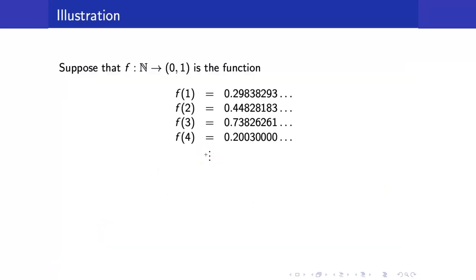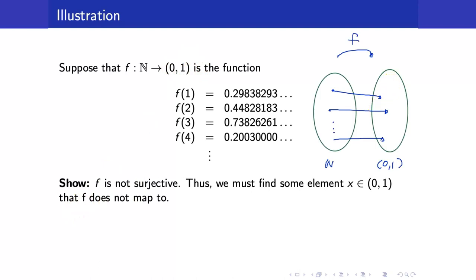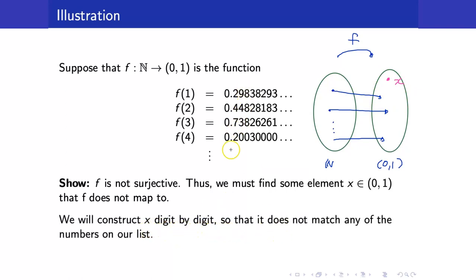Suppose here is our function f. Let's say f(1) is some random number in (0,1), and similarly for f(2), f(3), f(4), and so on — I just have random numbers here. Remember, our goal is to show that f is not surjective. That is, we must find some element in (0,1) that f does not map to — an extra element with no corresponding pre-image in the natural numbers. We want to construct this x, digit by digit, so it does not match any of the numbers on our list f(1), f(2), f(3), f(4), and so on.